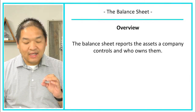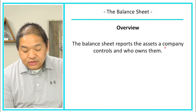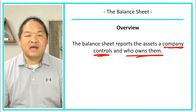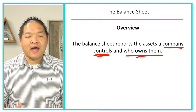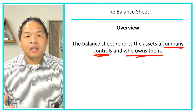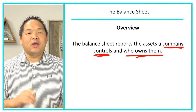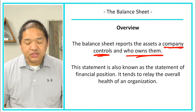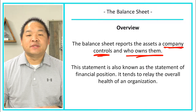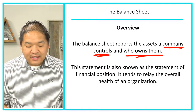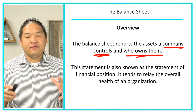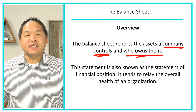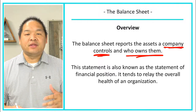The balance sheet reports the assets a company controls and who owns them. The easiest way to think about it is the company has all of these assets, but who really owns them? The statement is also known as a statement of financial position. It tends to relay the overall health of the organization, giving us a pulse of how the organization is doing.